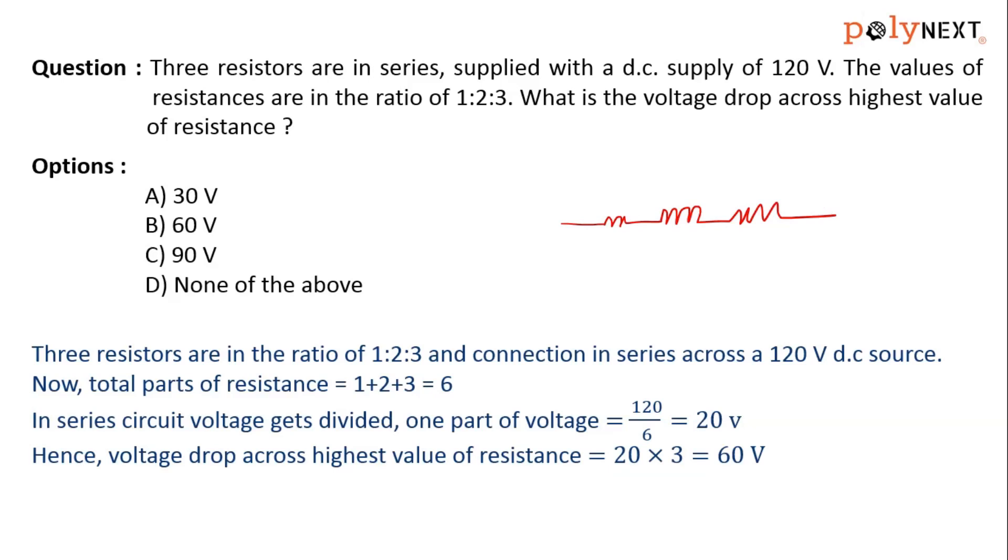As you know, the supply voltage here is 120 volts. We have to find out the total units of resistance. Since it is 1:2:3, the total parts of the resistance is 1 plus 2 plus 3.